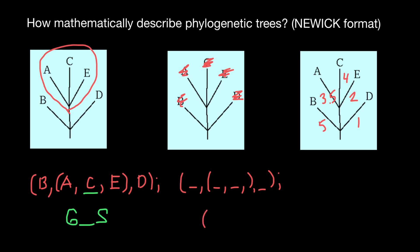We open parentheses, then go B, colon, 5, comma, and then go parentheses, A, and the length is going to be colon 3.5, comma.